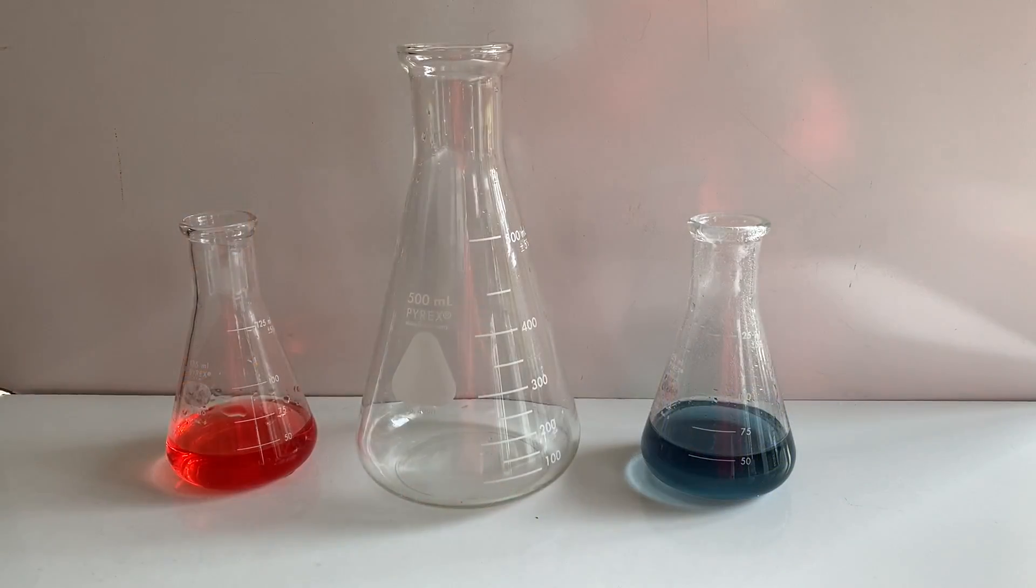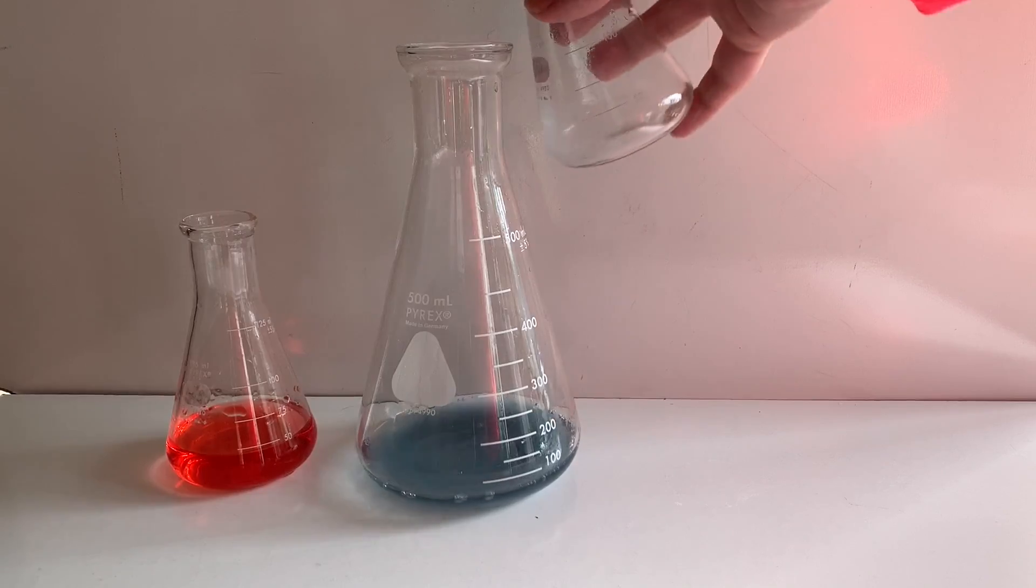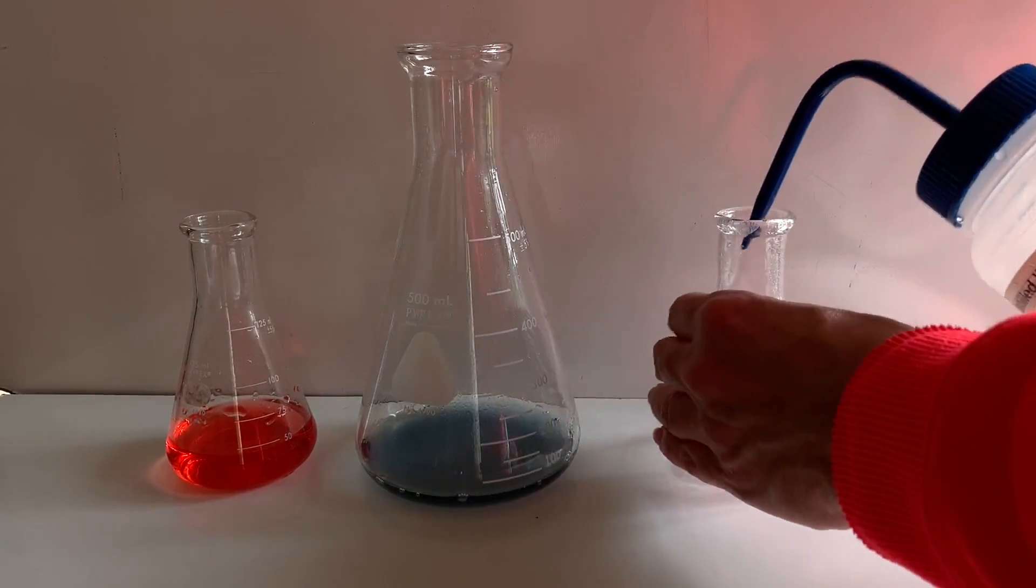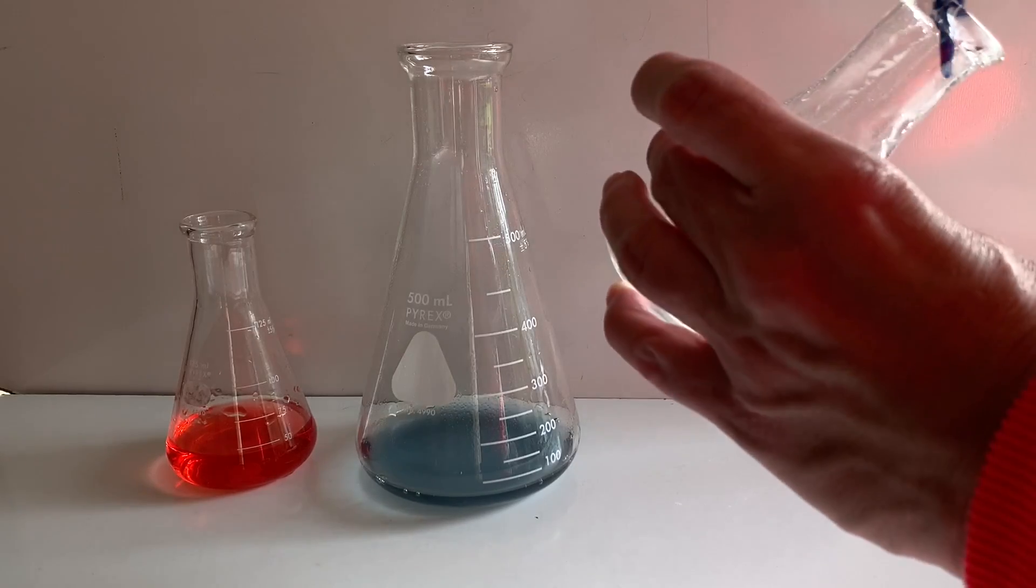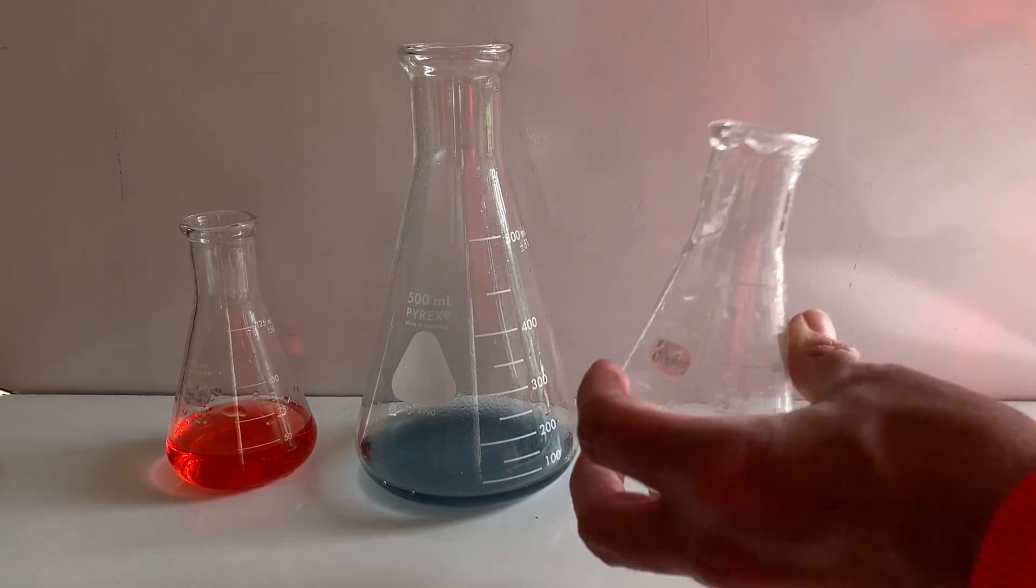The two reactants, sodium bicarbonate and acetic acid, are placed in a larger Erlenmeyer flask for the reaction to take place. I'm rinsing down the inside of the smaller flask so that I remove all of the measured sodium bicarbonate and acetic acid to take place in this reaction.